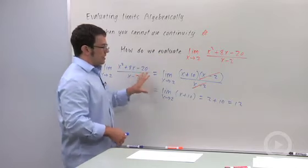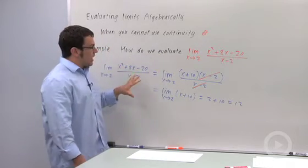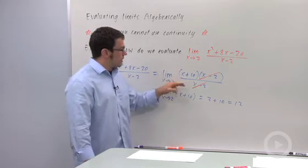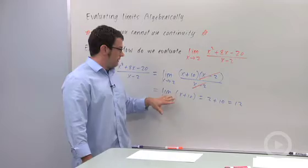So generally, when you're evaluating limits without continuity, you're going to have some kind of problem like division by 0. You just have to look for ways to use algebra to eliminate that problem and then evaluate the limit.